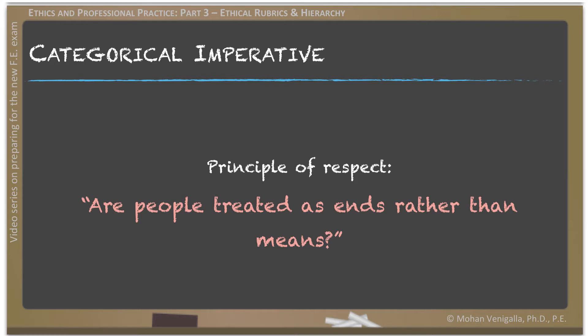The second test of categorical imperative is the principle of respect. Are people treated as ends rather than means? We all know the phrase: ends do not justify means. If somebody or a group of people are harmed in arriving at the ends, can the harm to those individuals be justified? For example: most consumers love inexpensive goods — will the acceptance of cheap goods change if they were produced in human sweatshops halfway across the world?